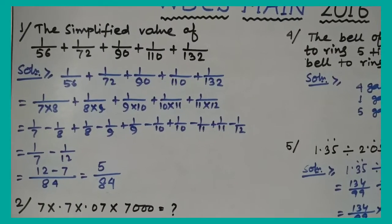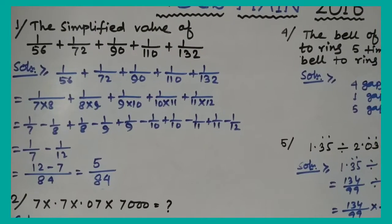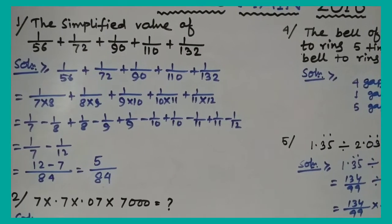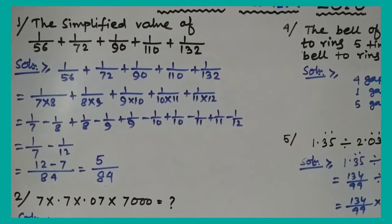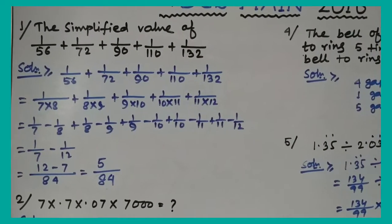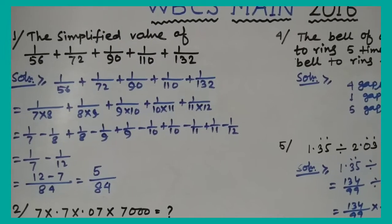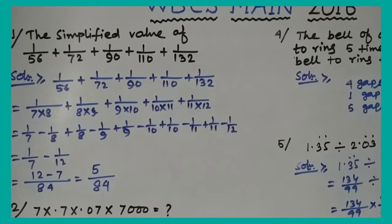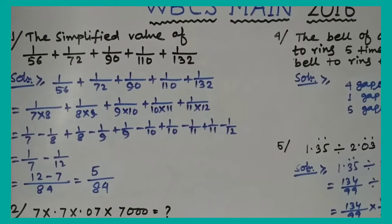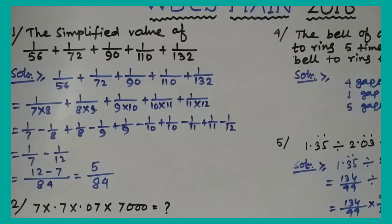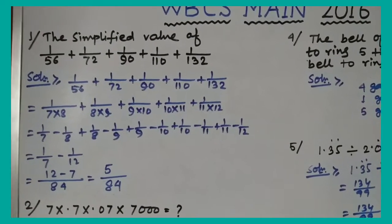Using partial fractions: 1/(7×8) = 1/7 − 1/8. Similarly each term telescopes: 1/7 − 1/8, 1/8 − 1/9, 1/9 − 1/10, 1/10 − 1/11, 1/11 − 1/12. All intermediate terms cancel, leaving 1/7 − 1/12, which equals 5/84.